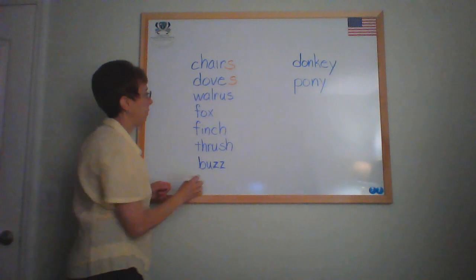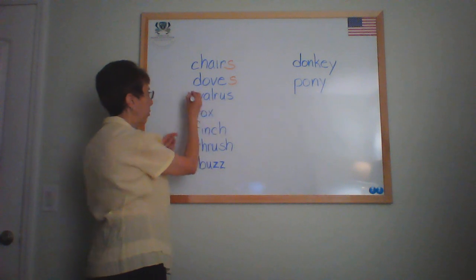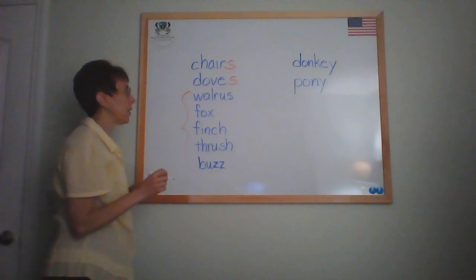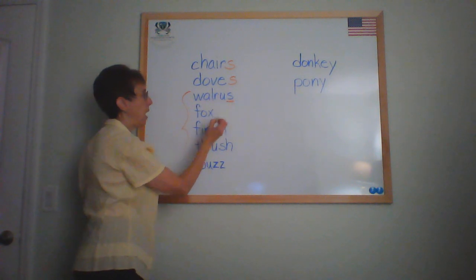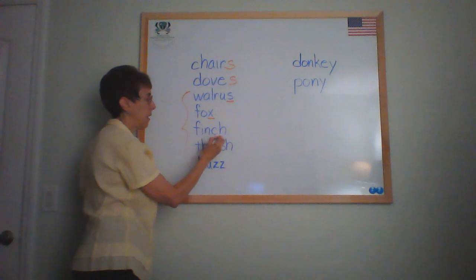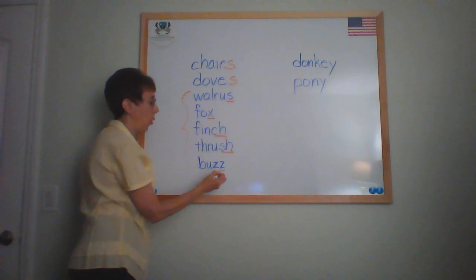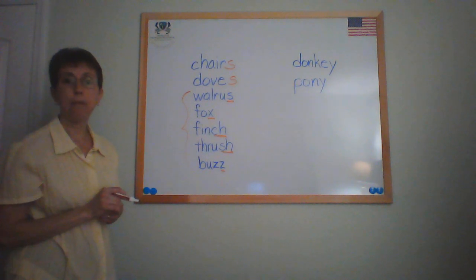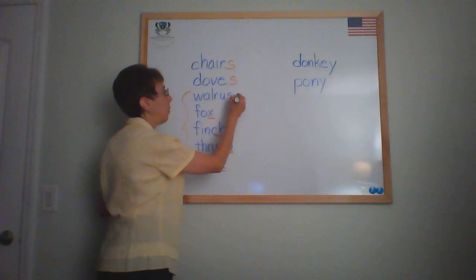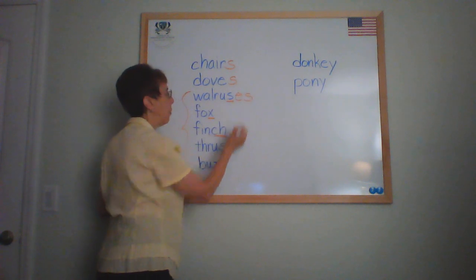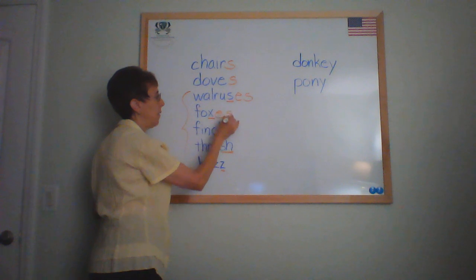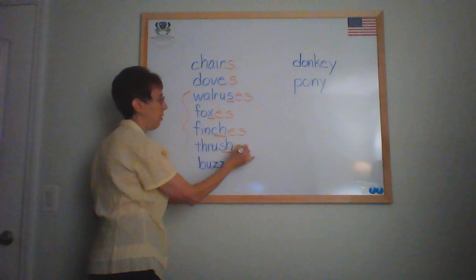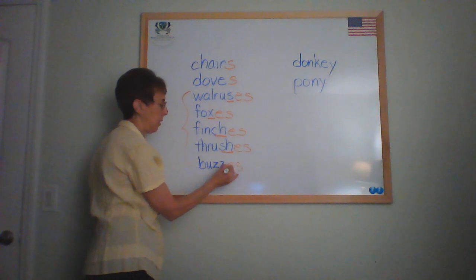The next section is a group of words where we need to look at the endings. Our rules tell us that anytime we have a noun ending in S, X, CH, SH, or Z, we need to add ES to make it plural. So walrus becomes walruses, fox becomes boxes, finch becomes finches, thrush becomes thrushes, buzz becomes buzzes.